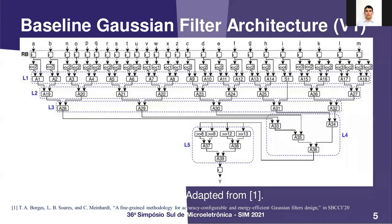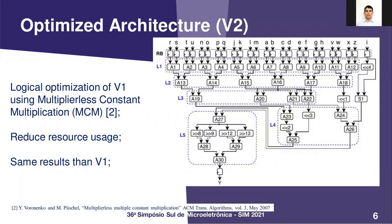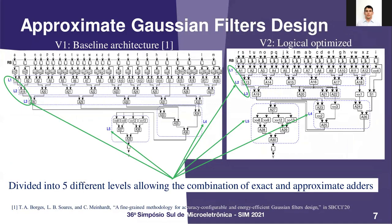The baseline architecture was proposed by Borges et al., and they used the bit quantization technique. We refactorized it using the MCM to obtain the V2 architecture. The logical refactoring changed the adders, reducing the hardware resources used while keeping the correct function results. To evaluate the use of approximate adders, we divided both architectures into five different levels, using approximate and exact adders, totalizing 32 different combinations for each architecture.